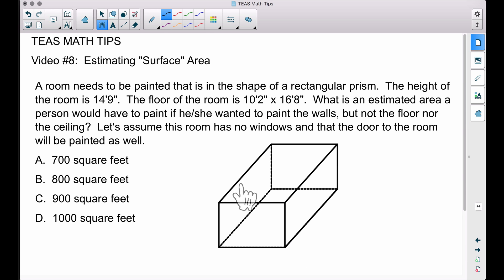The height of the room is 14 feet 9 inches. The floor of the room is 10 feet 2 inches by 16 feet 8 inches. What is an estimated area a person would have to paint if they wanted to paint the walls, but not the floor nor the ceiling? Let's assume this room has no windows and that the door will be painted as well. So we want to paint the four walls but not the ceiling or floor.